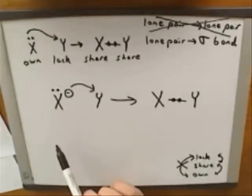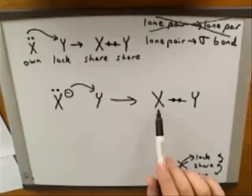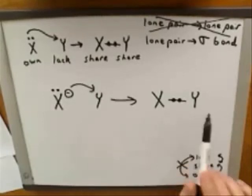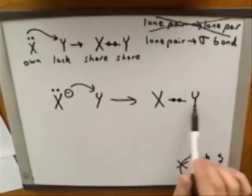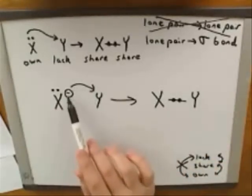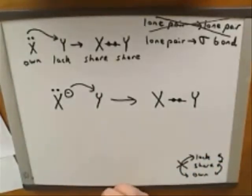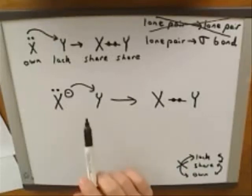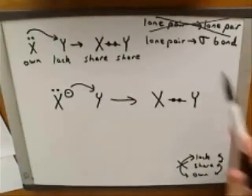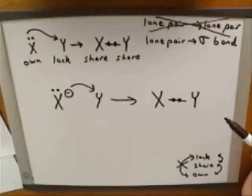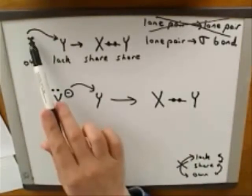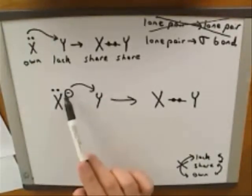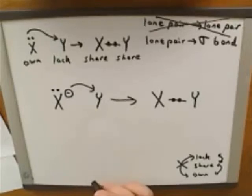So these pictures are pretty much equivalent. There would be some charges in this picture, but I'm not going to draw those right now — I don't want to focus on charges, so let's just focus on the idea that when the tail of the arrow is on a negative charge, that really means the electrons are coming from a lone pair. So this is really just another example of a lone pair to sigma bond transition. When the electrons are coming from a lone pair, that can be indicated either by the tail being on the lone pair or by the tail being on a negative charge that represents a lone pair.